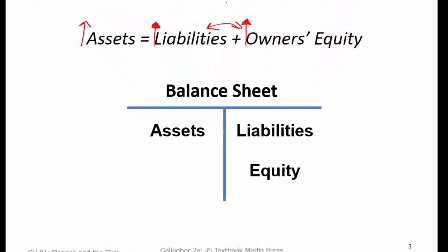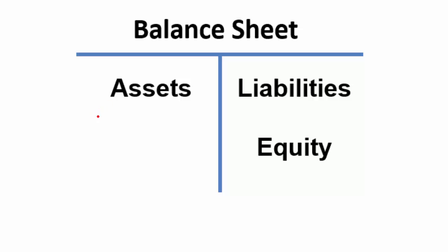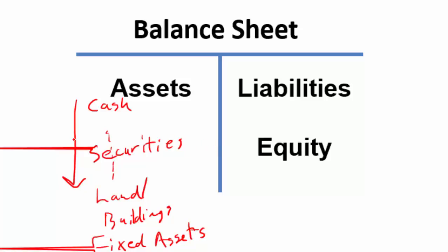We'll think about balance sheet accounting in the form of the classic T-account, where assets always go on the left-hand side, listed in order of decreasing liquidity — meaning we list cash first, then things that are less convertible into cash. All of these things are vehicles for making money. Cash can be put into securities or a bank account to earn interest. Land and buildings are the capital stock used by the business to sell its product and make money.